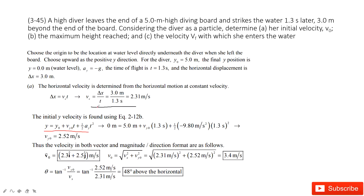For the initial velocity, we know the x component and y component, so we can write it in two components in vector format. From that we get the initial velocity, the magnitude of the initial velocity, and also the angle theta.